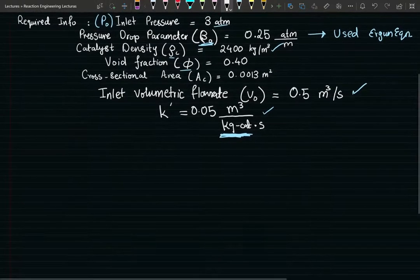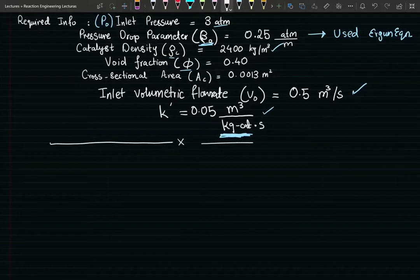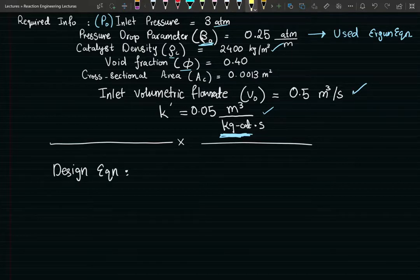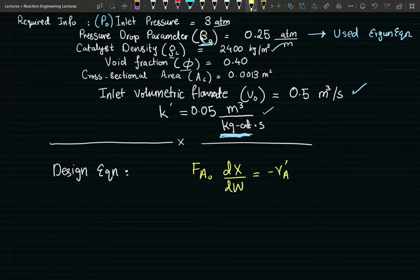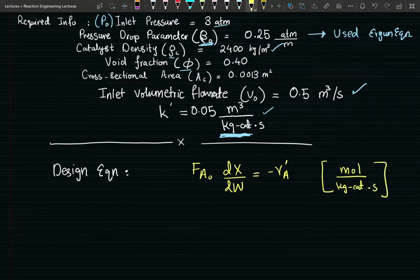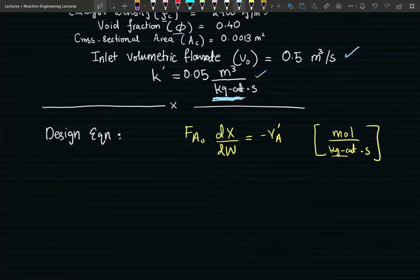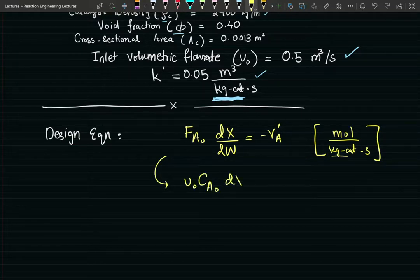Let's start with our design equation for a packed bed. Following the notation used by Dr. Fogler, the design equation is F_A0 dX/dW = -r'_A. The prime on r'_A indicates that the units are moles per kilogram of catalyst per second, not moles per liter or moles per cubic meter. This can be rewritten as the inlet volumetric flow rate times the inlet concentration times the derivative term equal to the negative rate expression.